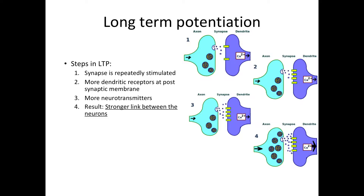Let's go over those steps one more time. Whenever a synapse is repeatedly stimulated over and over again, the postsynaptic dendrite will embed more dendritic receptors at the postsynaptic membrane. Then eventually a message will go back to the presynaptic cell, and that cell will start releasing more neurotransmitters because there are more receptors. This results in a stronger link between the neurons.